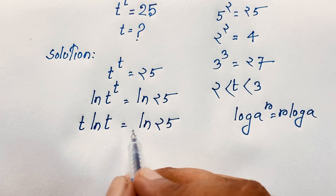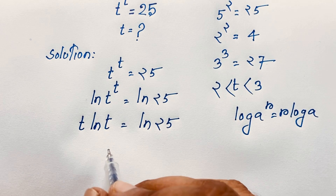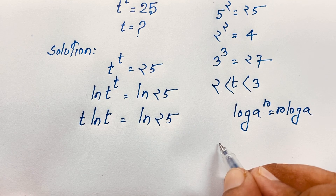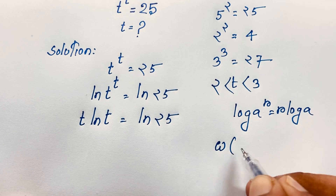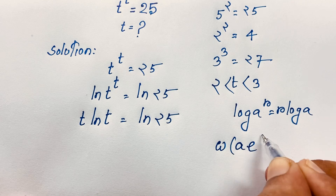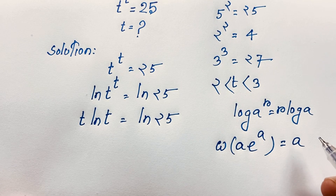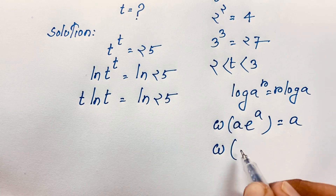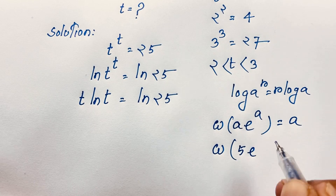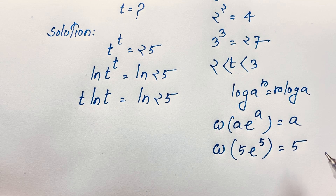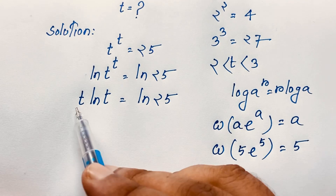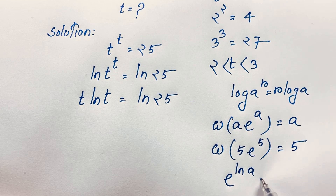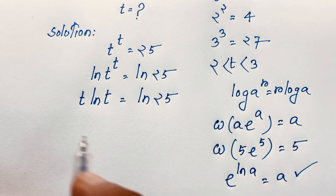Now I want to apply the Lambert W function — this is an interesting math formula. We know that the Lambert W function satisfies: W(a · e^a) = a. For example, if you think of W(5 · e^5), it equals 5. So we need e in our expression. We know that e to the power of ln(a) equals a, and I will apply this formula here.